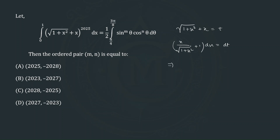Simplifying this, it becomes (x + √(1+x²)) / √(1+x²), multiplied by dx, equals dt. Now, x + √(1+x²) is just t, so the denominator √(1+x²) is what we need to find. This is the main motivation of this derived PYQ, and we are going to discuss this using special expressions.